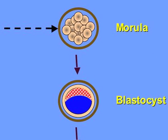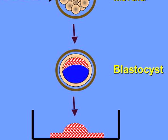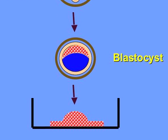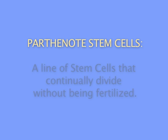And to a blastocyst stage of approximately 100 cells. Inside the parthenote blastocyst is a group of pluripotent cells that can be recovered and developed in the laboratory in a continual line of cells that duplicate their DNA, divide that DNA into two cell types, and form a line of parthenote stem cells.